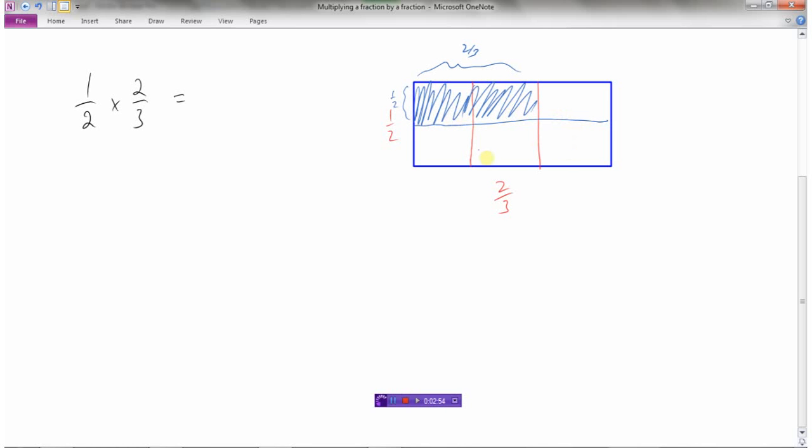So there's one, two, three, four, five, six pieces here. I have two of them shaded. So two out of the six.